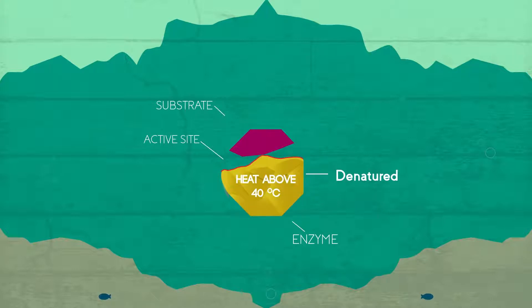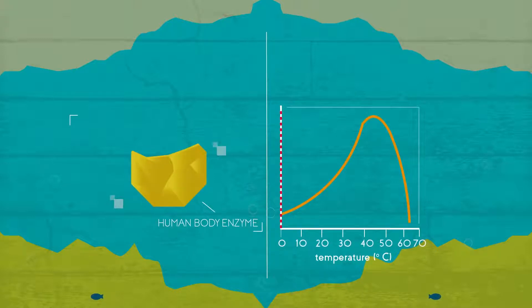So for example, if the temperature of the environment is too high for the specific enzyme, it may become denatured. Typically, enzymes that operate in warm-blooded animals tend to have an optimal temperature of 37 degrees Celsius, which is body temperature.